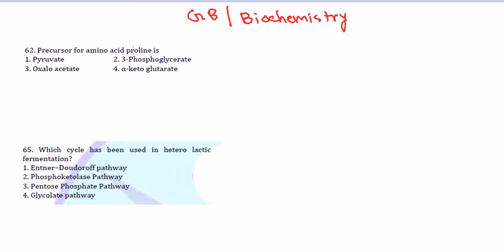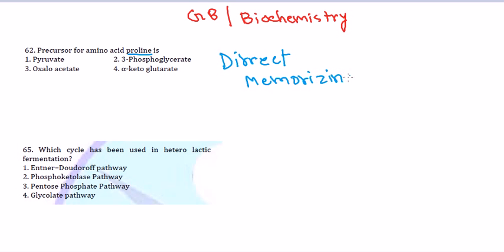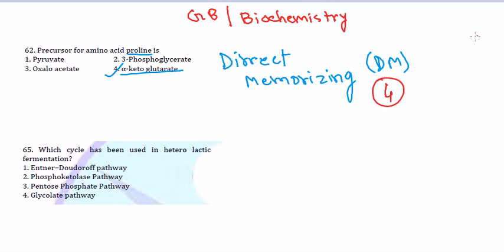The first question is: what is the precursor for the amino acid proline? This is a direct question — there is no way to solve it if you don't know the answer, because it's not conceptual, it's completely a memorizing question. This is a Direct Memorizing or DM type of question. The answer is alpha-ketoglutarate, because proline is formed from alpha-ketoglutarate. So option four, alpha-ketoglutarate, is the correct answer.